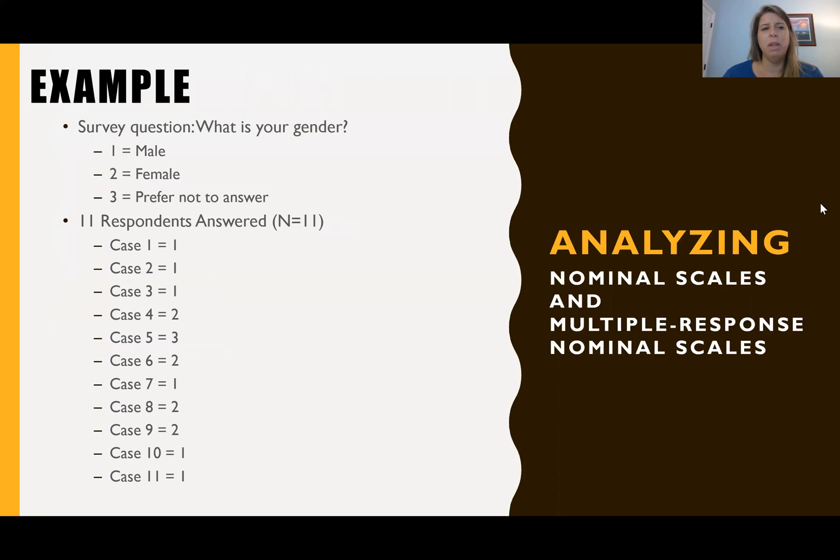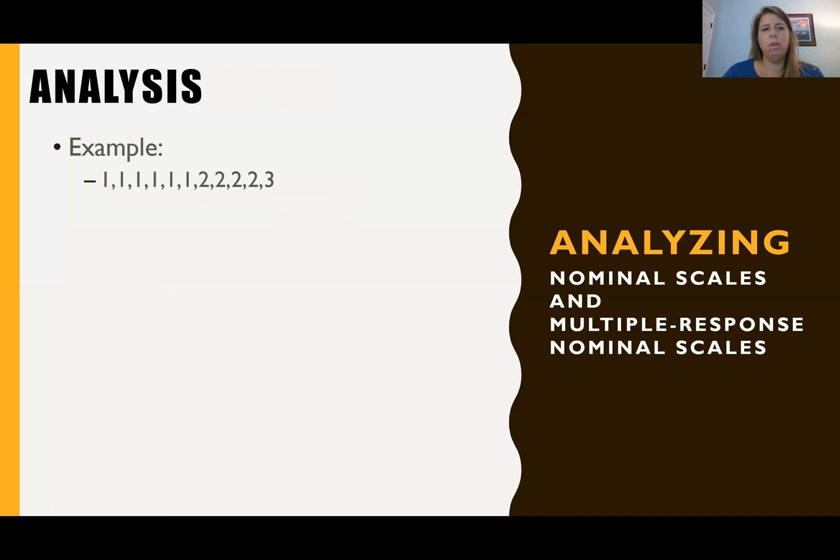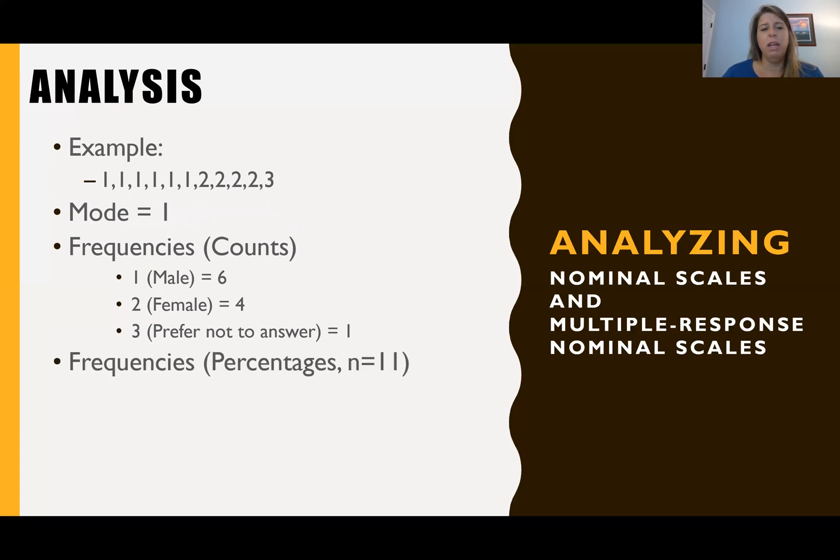So let me show you an example. So I have this survey question, what is your gender, and it's 1, 2, or 3. So 1 for males, 2 for females, 3 for prefer not to answer. I have 11 respondents who answered my survey and I have the different cases and here are their answers in numbers. And so if I put them in order, all the answers in order, this is what I get and I can see that my mode is 1. And then I have frequency counts of 6 males, 4 females, and 1 prefer not to answer. So if I put it in count format, this is what it would look like.